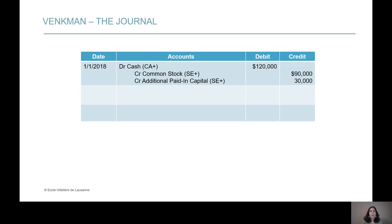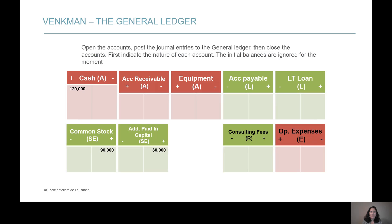So this is how you deal with transaction number one of Venkman. Cash is debited by the full amount of $120,000. That full amount is split between the common stock account — where you put the par of $1 times 90,000 shares issued equals $90,000 — and the APIC account, where you record the difference: $120,000 minus $90,000 equals $30,000. In the general ledger, cash is debited by $120,000 and the two SE accounts are credited accordingly.